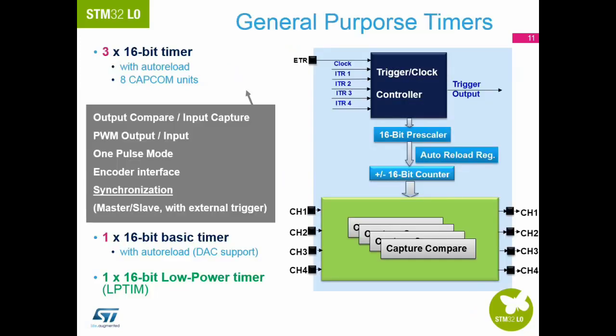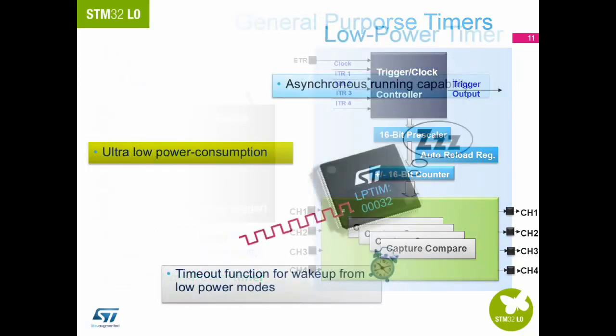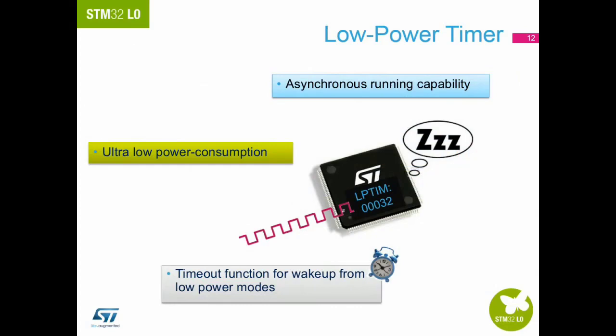There are three general purpose timers on the STM32 L0 offering output compare, input capture, PWM, one pulse mode and encoder interface. Each timer connects to various GPIO pins. We have one basic timer with no external connections, dedicated to generating a time base for the DAC. New to the STM32 family, we have a dedicated ultra low power timer which has the ability to run asynchronously. This timer will be explained in the low power peripheral section later.